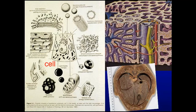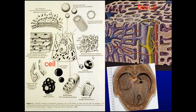The Golgi apparatus looks like pancakes with a lot of vesicles pinching off. The cell membrane, mitochondrion — which is a double membrane important for making ATP. Inclusions, lipid is one of those inclusions. A lysosome is another enzyme-containing structure, membrane-bound, that is involved in remodeling cells.